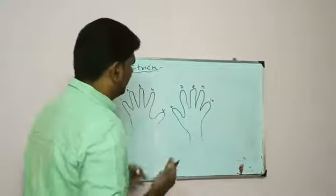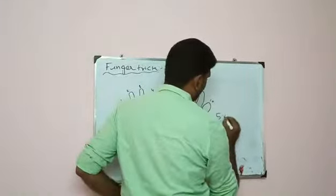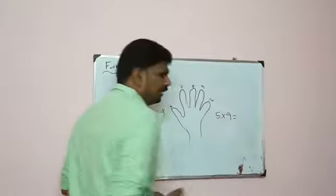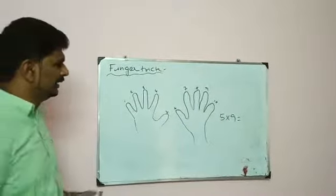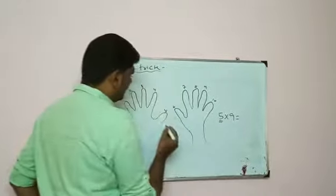For example, we can multiply 5 into 9. We can multiply 5 into 9 using this method with our fingers.